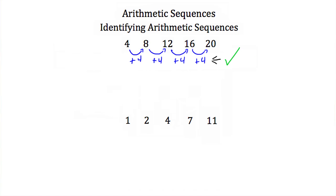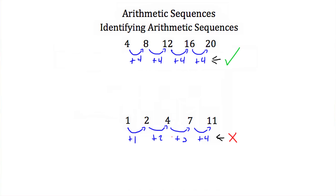Let's look at our second example here. We have the sequence 1, 2, 4, 7, and 11. While using addition, if I want to go from 1 to 2, I have to add 1. To go from 2 to 4, I would have to add 2. To go from 4 to 7, I would have to add 3. And from 7 to 11, I would have to add 4. Now we are adding each time, but we're not adding the same amount — we're adding increasing amounts each time. So because these amounts are not constant, this is not an arithmetic sequence.